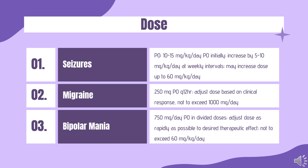Bipolar Mania: Indicated for treatment of manic episodes associated with bipolar disorder. Stavzor: 750 mg/day PO in divided doses; adjust dose as rapidly as possible to desired therapeutic effect, not to exceed 60 mg/kg/day. Depakote ER: 25 mg/kg/day PO once daily; adjust dose to desired clinical effect as rapidly as possible, not to exceed 60 mg/kg/day.